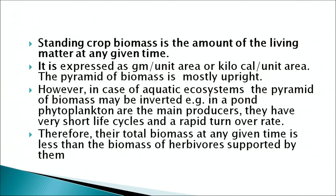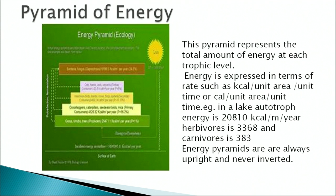The standing crop biomass is the amount of living matter at any given time, expressed as grams per unit area or kilocalories per unit area. Pyramids of biomass are mostly upright. However, in aquatic ecosystems the pyramid of biomass may be inverted — for example, in a pond ecosystem, phytoplanktons have a very short life cycle and high turnover rate, so their total biomass at any given time is less than the biomass of the herbivores they support. This figure shows the pyramid of energy at each trophic level.